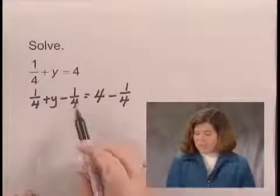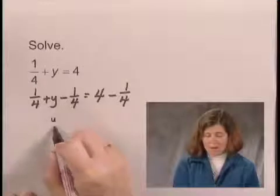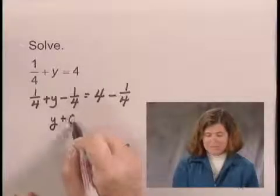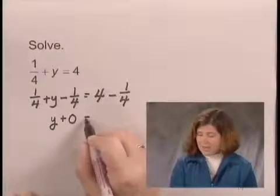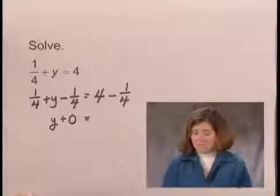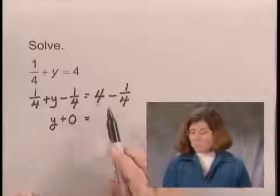On the left side of the equation, this simplifies to y plus 0, since 1 fourth minus 1 fourth is 0. And on this side of the equation, we'll need to subtract 4 minus 1 fourth.